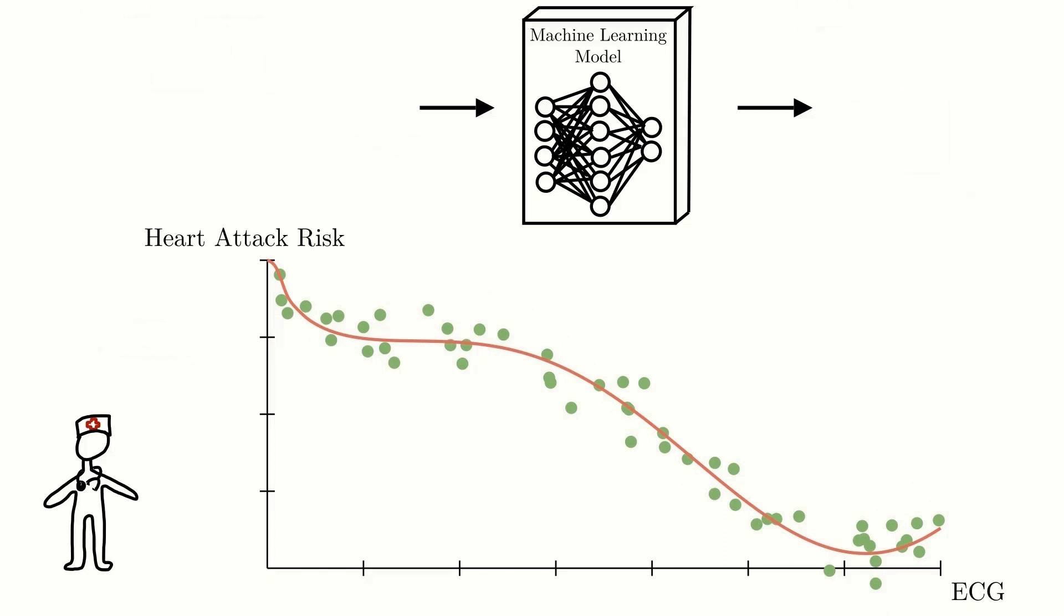Once we have fitted the neural network to the data, we can use the neural network to predict the heart attack risk for any new patient that comes to the hospital and gets an ECG, like this. For this particular patient, a low risk was predicted.